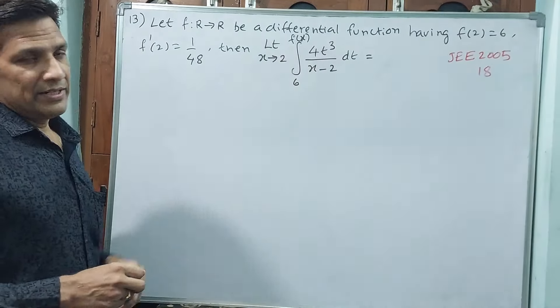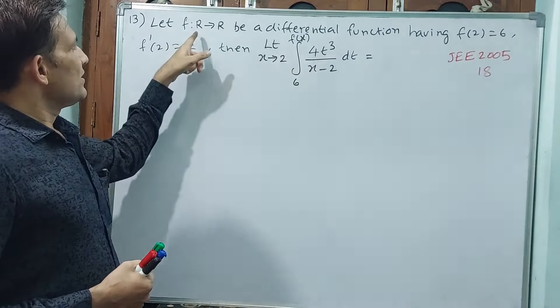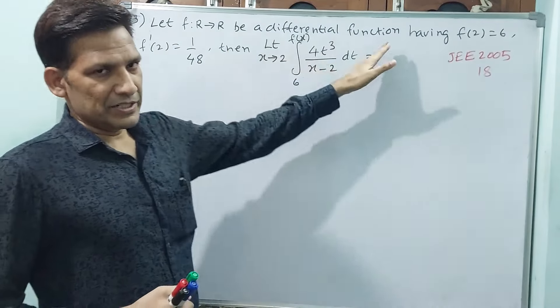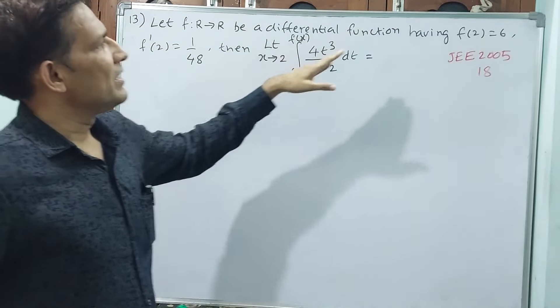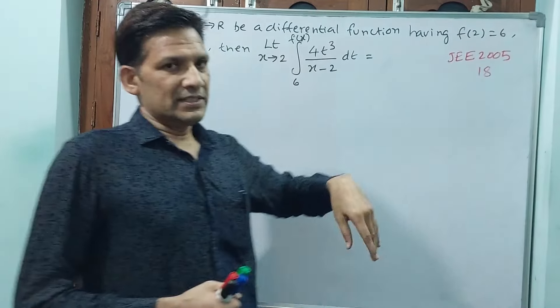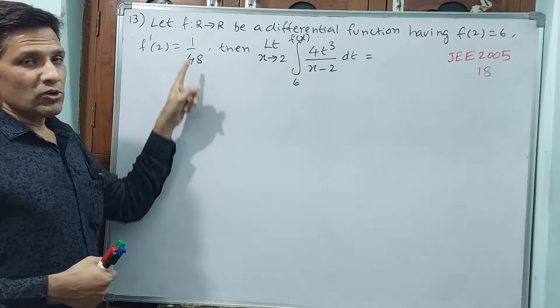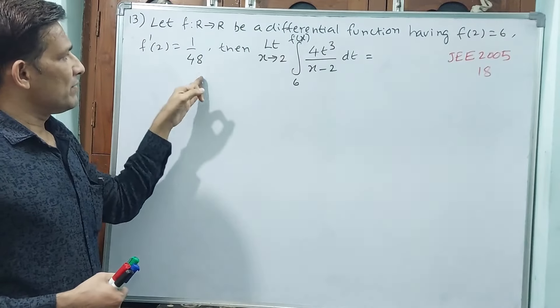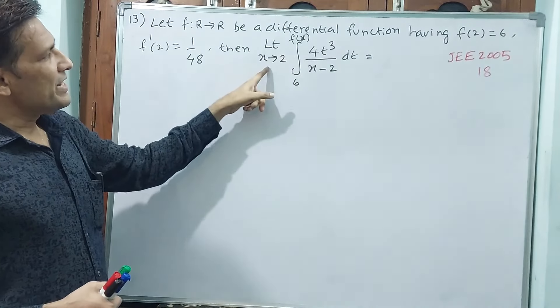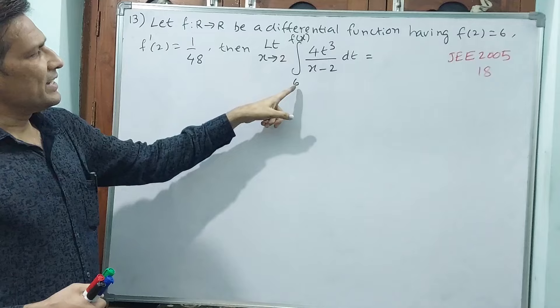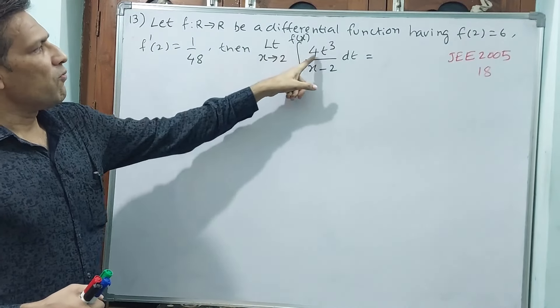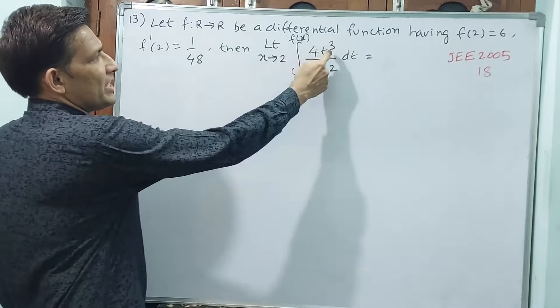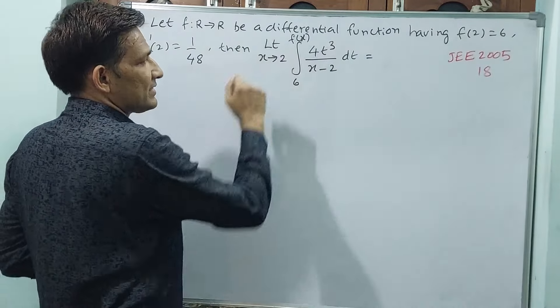See question number 13, let function mapping from real number to real number be a differentiable function, having f of 2 equals 6, f' of 2 equals 1 by 48. Then limit x tends to 2, integral 6 to f of x, 4t cube by x minus 2 dt. Observe carefully here, t is there, dt is there, x is there.